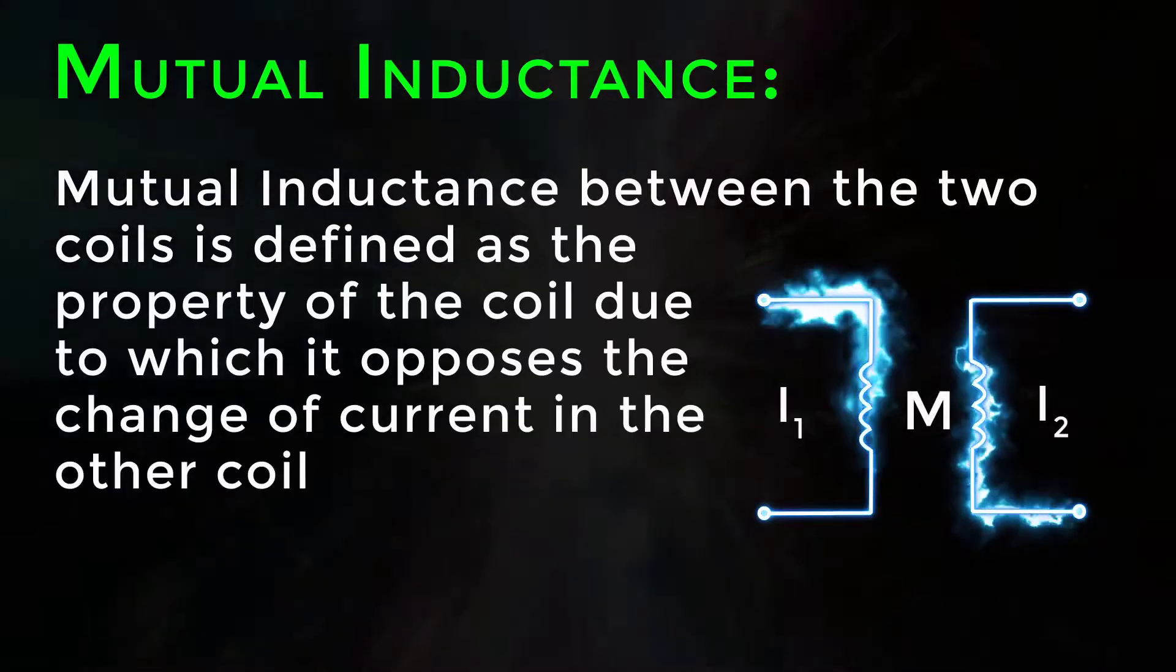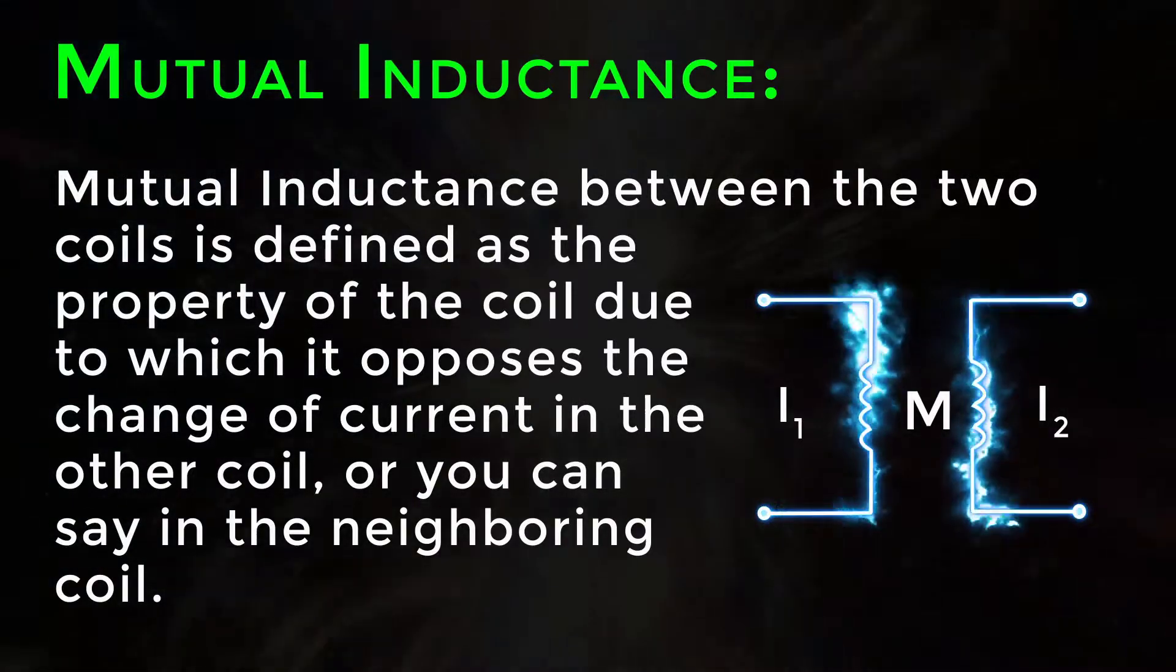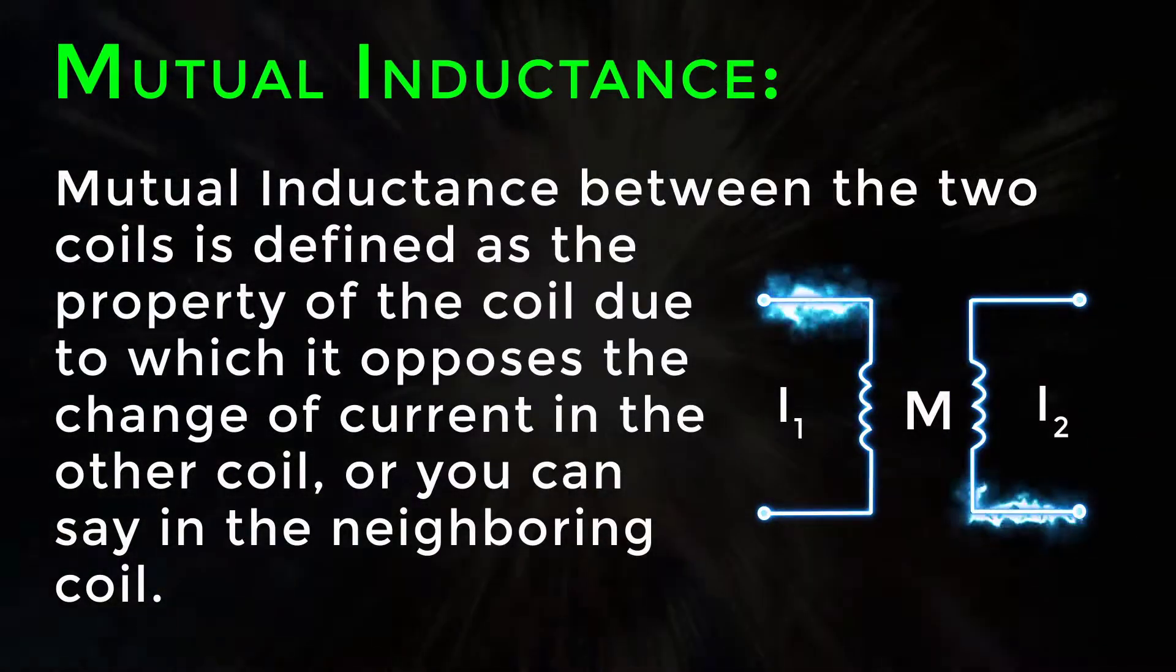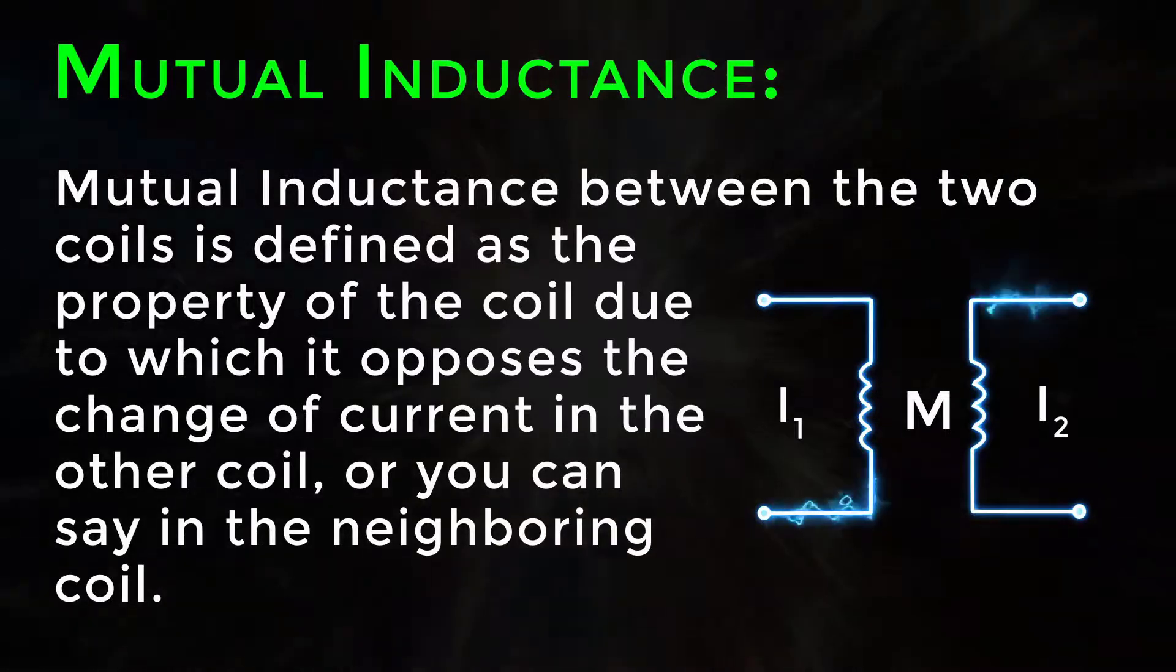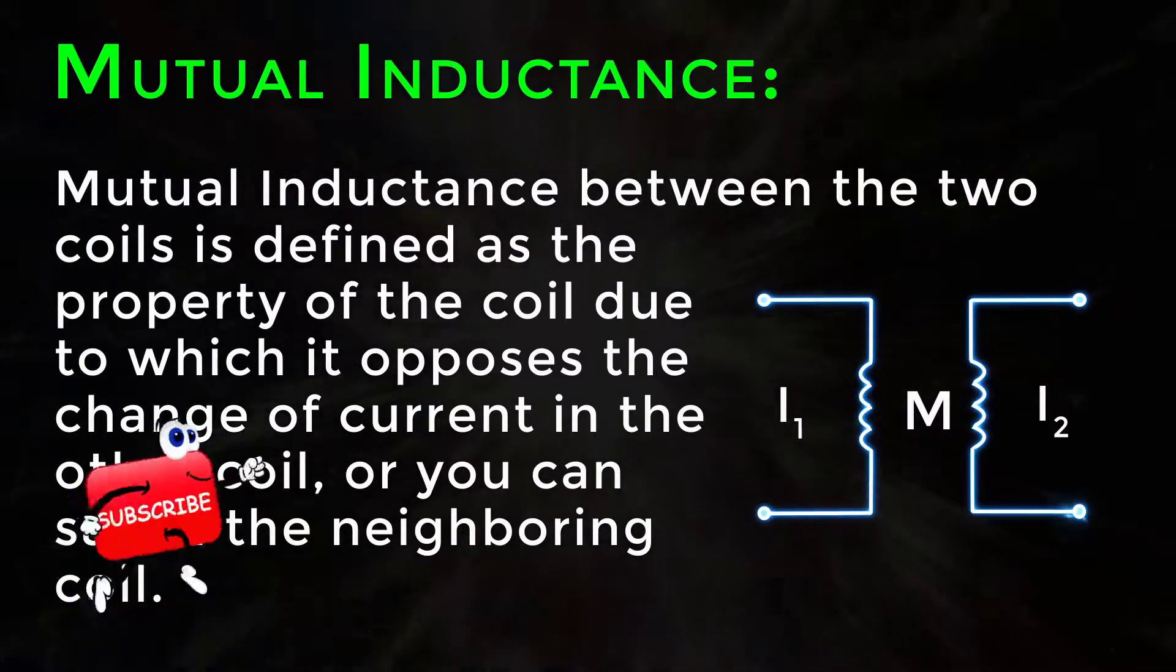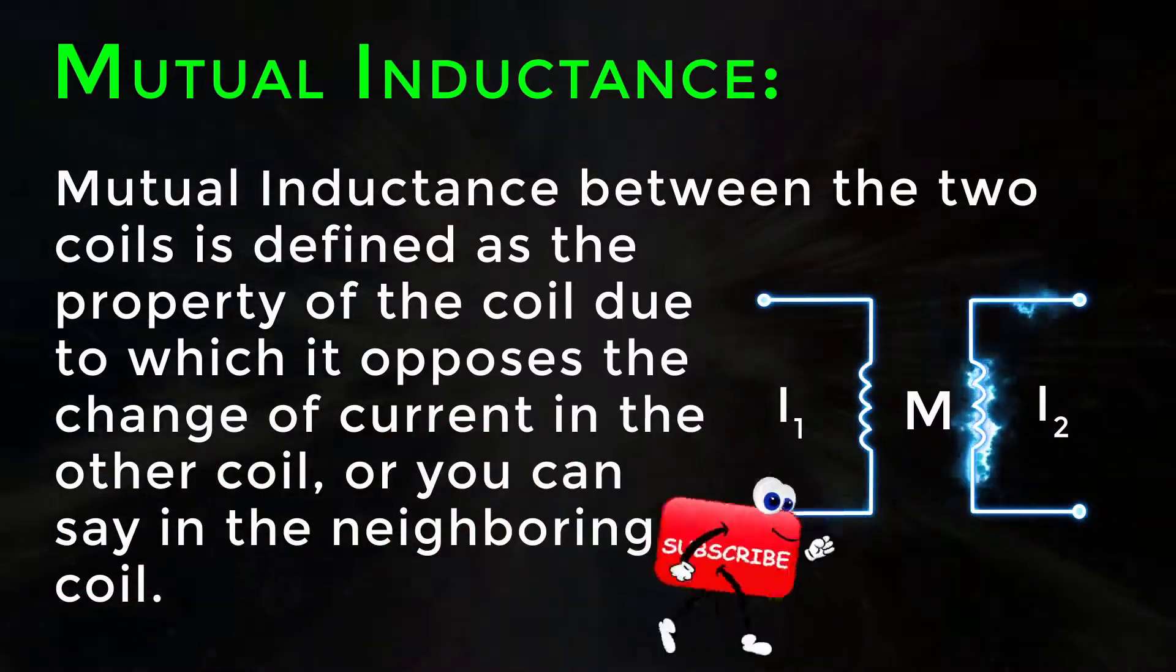Mutual inductance. Mutual inductance between the two coils is defined as the property of the coil due to which it opposes the change of current in the other coil, or you can say in the neighboring coil.